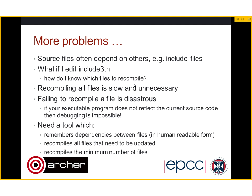There are even more problems when source files depend on others — for example, include files in C programs or modules in Fortran. How do I know which files to recompile? Recompiling all files is slow and unnecessary. But actually, failing to recompile a file is disastrous. There's nothing more difficult to debug than when the executable you're running doesn't reflect the current state of your source code. You run it, it produces an error, you look at the source code and you're not looking at the same code that was compiled. I've had that situation and you just get completely lost.